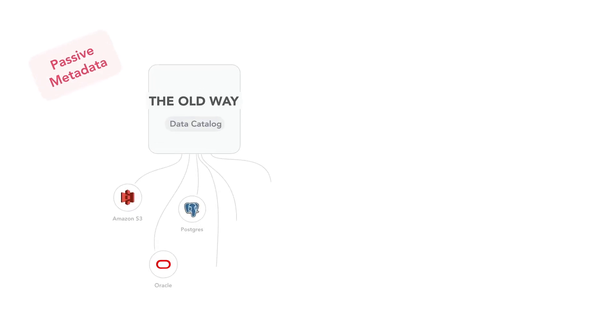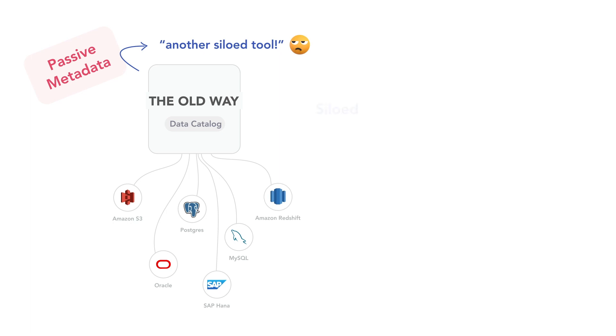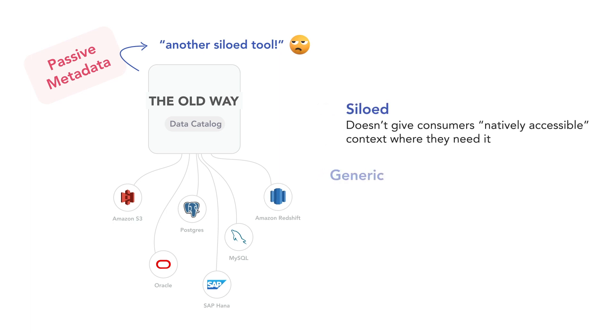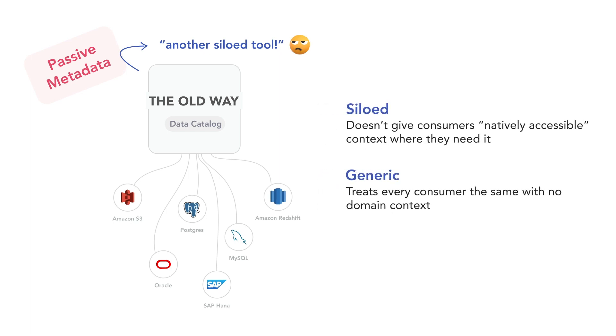Traditional data catalogs take all of your metadata out of a bunch of different tools and bring it together in yet another siloed environment — so a tool that was meant to break silos ends up being a silo in and of itself. The problem with this traditional approach is that your users actually want context where they are, when they need it.